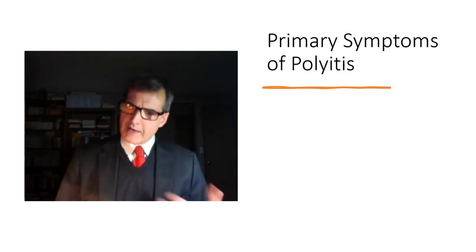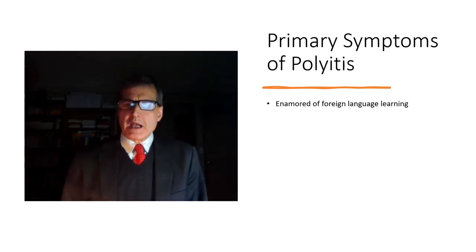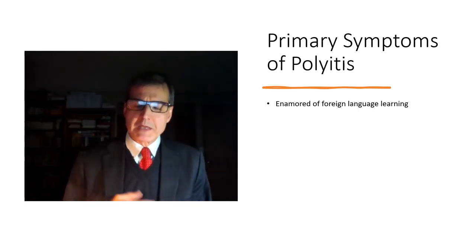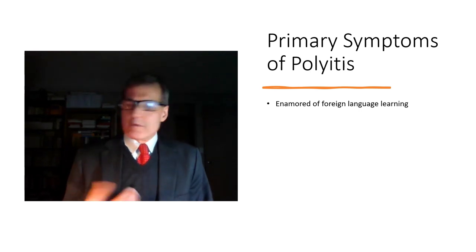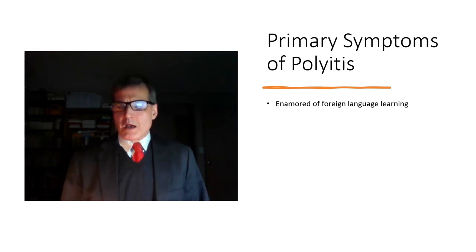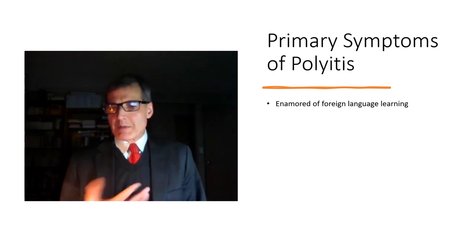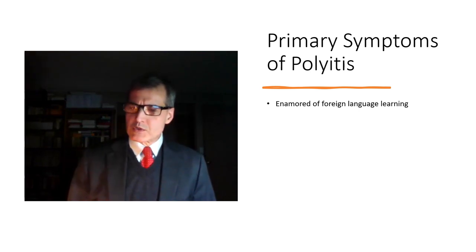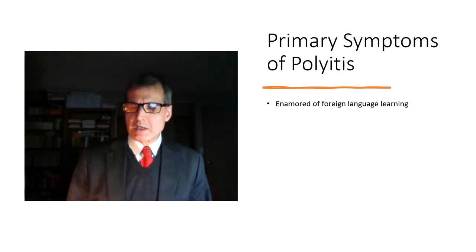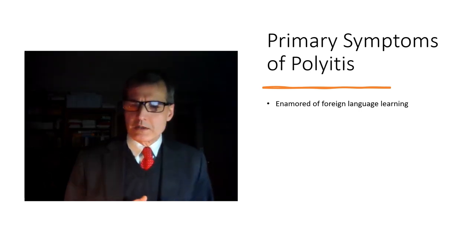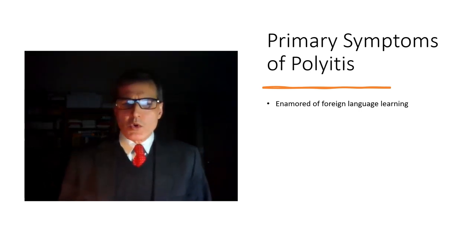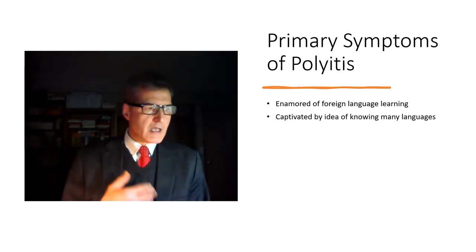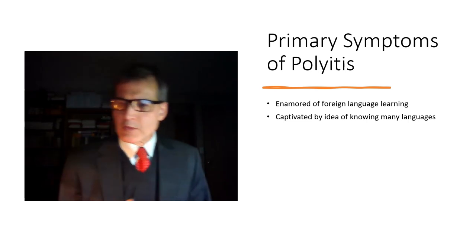The primary symptoms of polyitis manifest themselves generally in the following order. Let's see how many you have so we know how serious it is. The first thing that happens when you develop polyitis is that you find foreign language learning — which most people experience as boring, frustrating, or a waste of time — to be a positive experience. It's fun and interesting. You're good at it. You usually like it for one language and become interested in learning others, and this can take root in your soul in so many different ways.